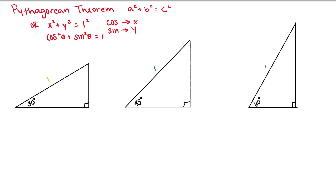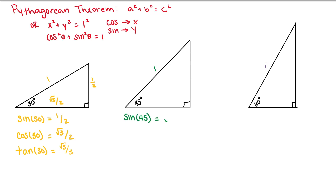Based on what we found before: the sine of 30 is 1/2, so our opposite side from our 30 degrees is 1/2. The cosine of 30 is √3/2, so our base or adjacent side is √3/2. The tangent of 30 is (1/2) over (√3/2), which is just √3/3. For our 45 degree triangle, the sine of 45 is √2/2, so our opposite side is √2/2. The cosine is √2/2, so our adjacent side is √2/2. And the tangent is our opposite over our adjacent, which is 1.